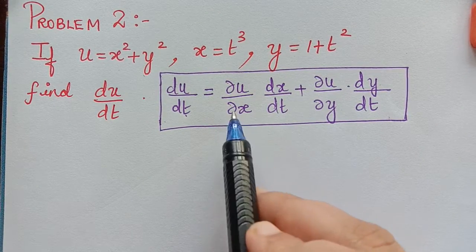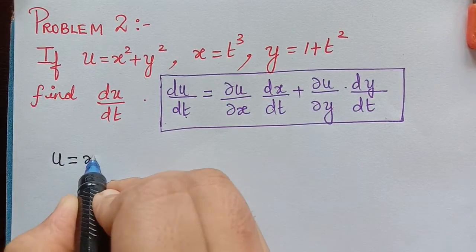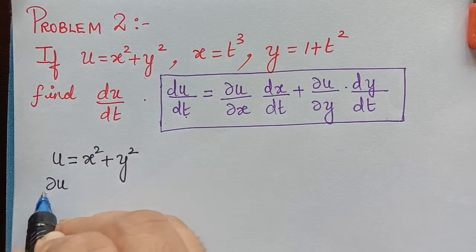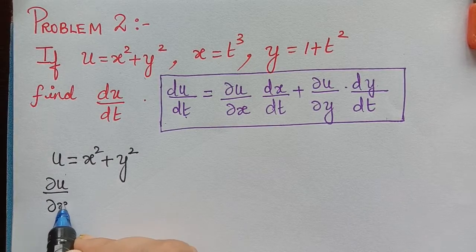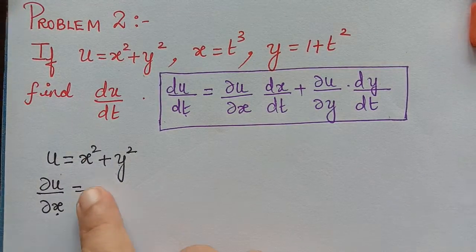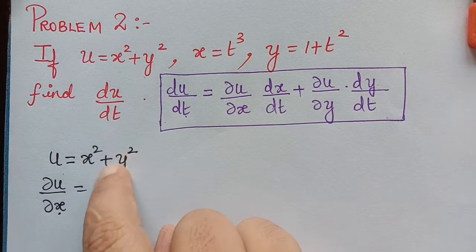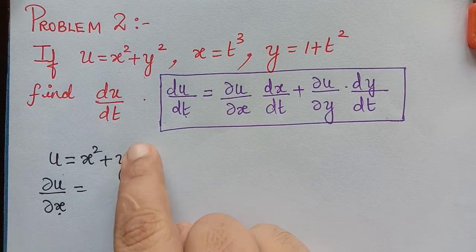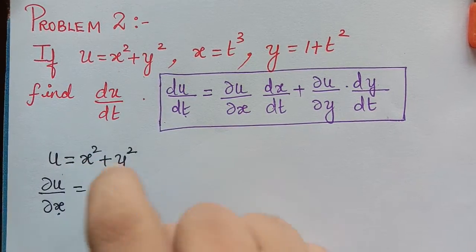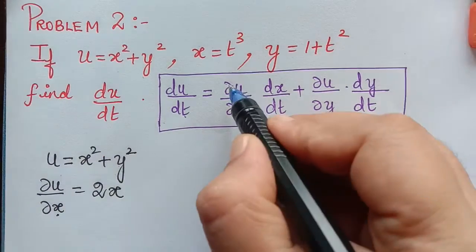First we find ∂u/∂x. We have u equal to x squared plus y squared. Differentiating partially with respect to x means y is treated as constant, so y squared becomes constant and its derivative is 0. We only differentiate x squared, giving ∂u/∂x equal to 2x.